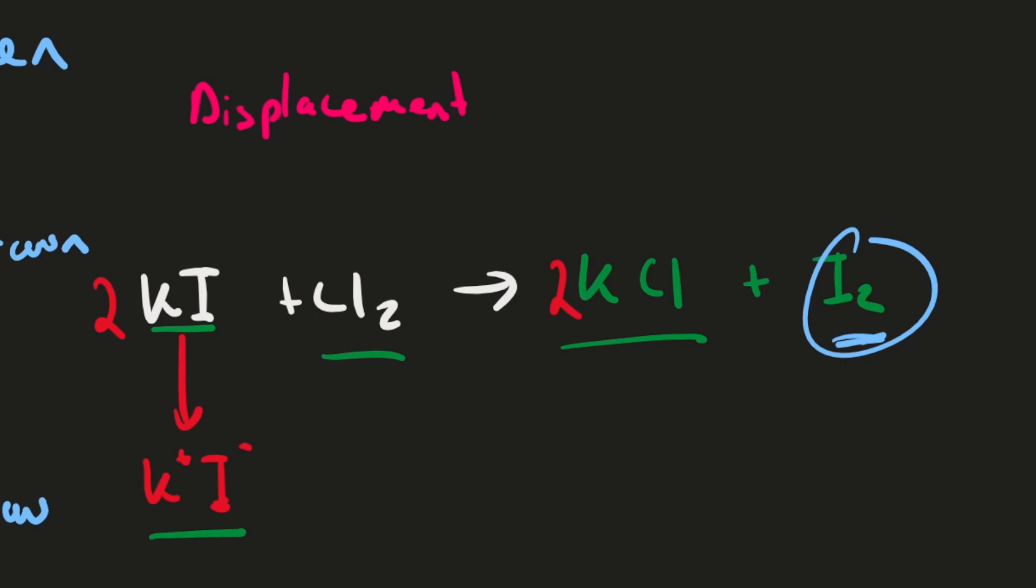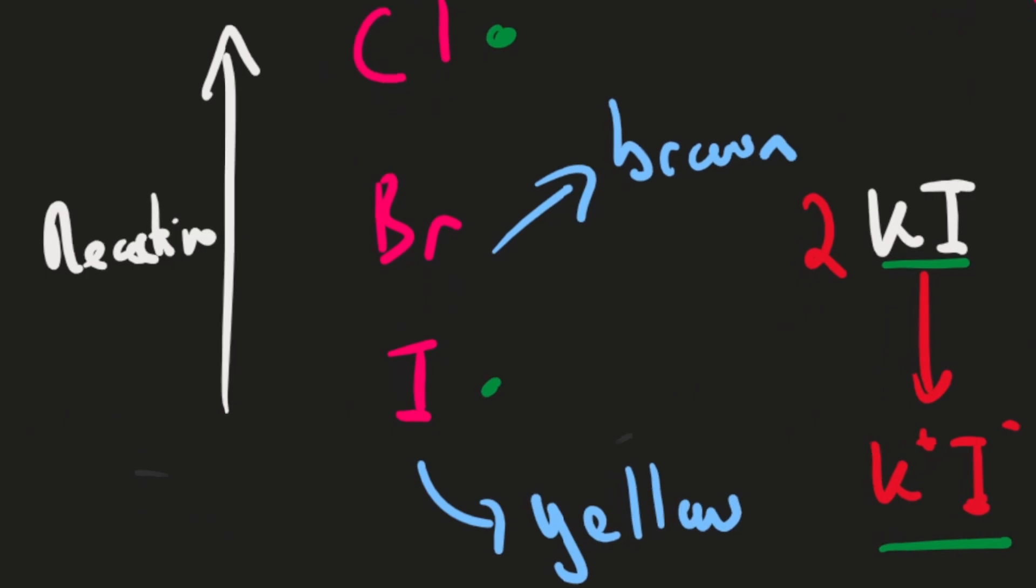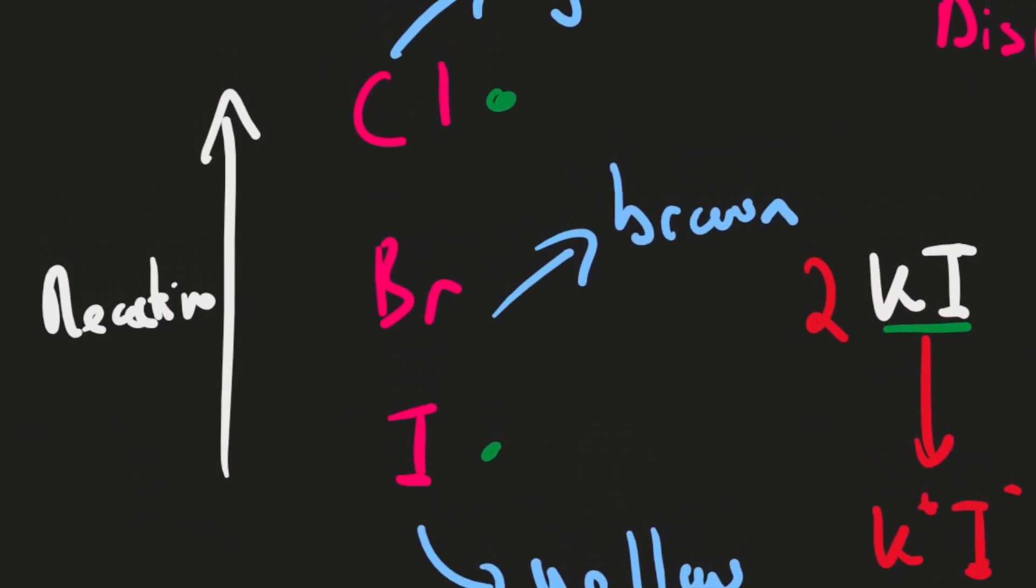And the way you can tell if a displacement reaction happens is that the color actually changes. If you look over here, we've got the reactivity of chlorine, bromine, and iodine - these are the main ones you'll deal with. Chlorine is the most reactive, it'll be able to kick out bromine and iodine. Bromine is the next reactive, it'll be able to kick out iodine. And iodine is the least reactive, it won't be able to kick out bromine or chlorine.